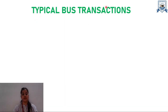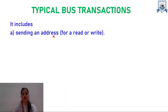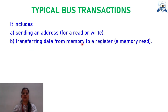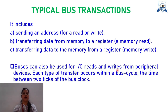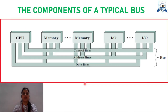Moving on to typical bus transactions: first, an address is sent for performing a read or write operation. A memory read involves transferring data from memory to a register, while a memory write involves transferring data from a register to memory. Buses can also be used for IO reads and writes from peripheral devices. Each type of transfer occurs within a bus cycle — the time between two ticks of the bus clock. The block diagram of a typical bus shows CPU, memory modules, and IO modules all interconnected through a bus structure consisting of control, address, and data lines.